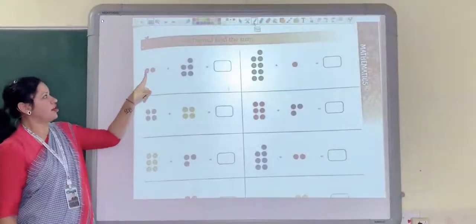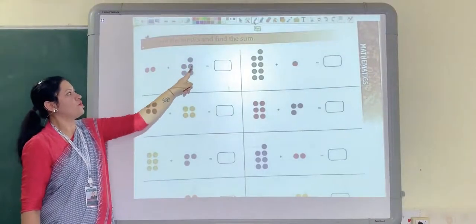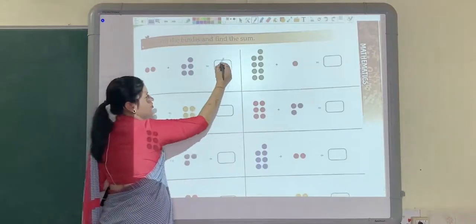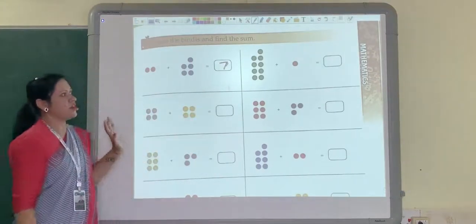Let's count. 1, 2, 3, 4, 5, 6, 7. So the answer is 7. So all together makes 7 bindis.